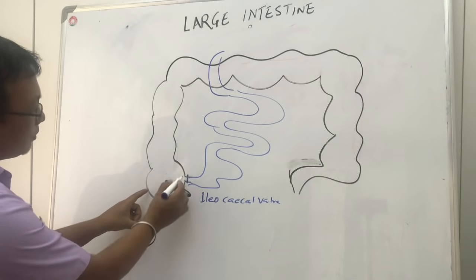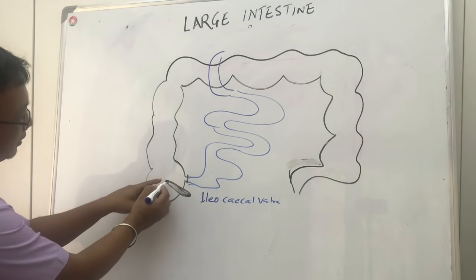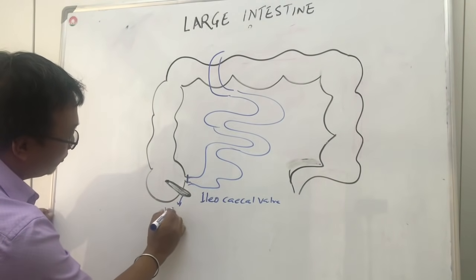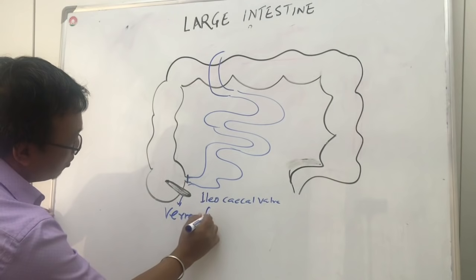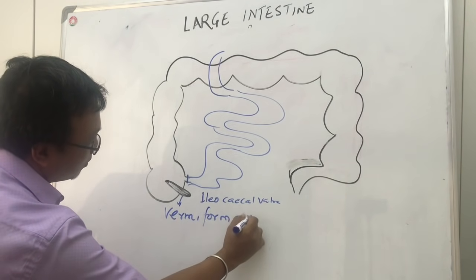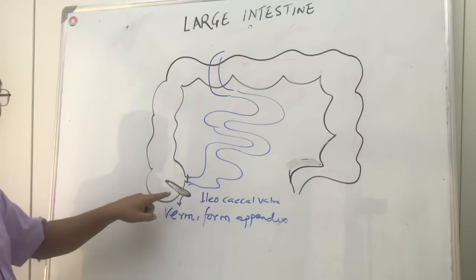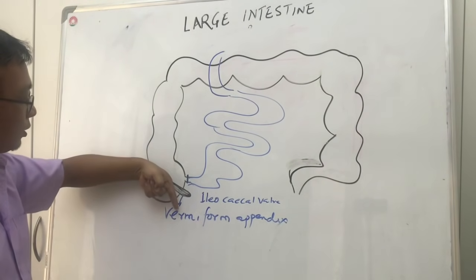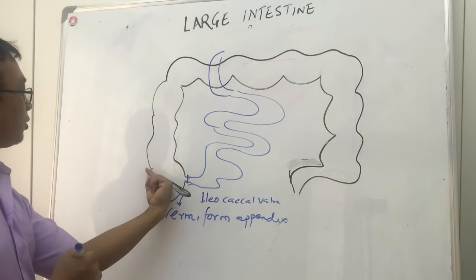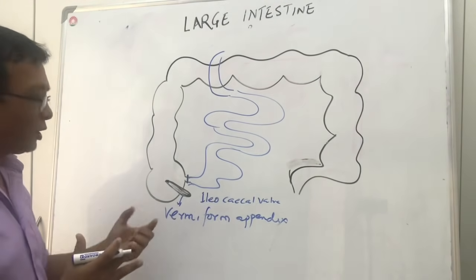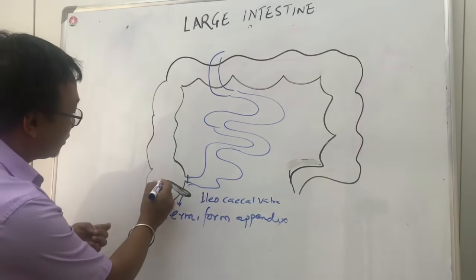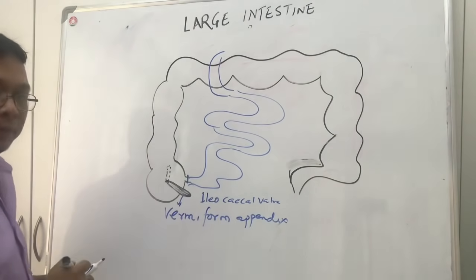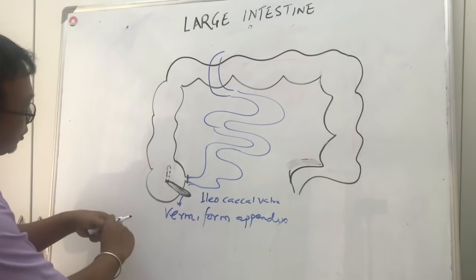The cecum is a totally blind pouch — a dead end. There is also a small worm-like structure called the vermiform appendix. This vermiform appendix can lie in different positions: sometimes at the 3 o'clock, 6 o'clock, or 11 o'clock position. The most common position is retrocolic, meaning behind the colon.